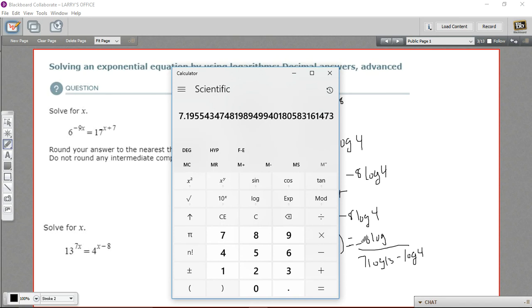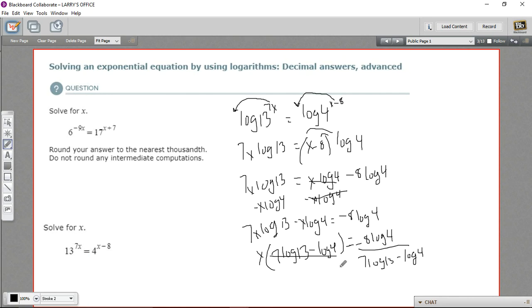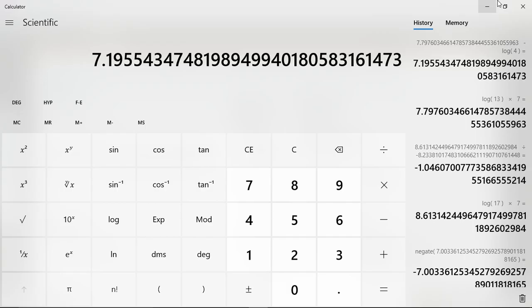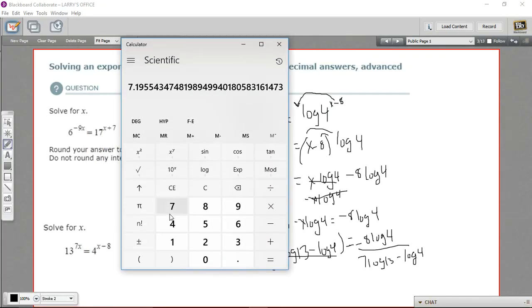Now we're going to have a negative 8 times a log 4. So let's try that. 4, we'll take the log, multiply that by 8, negative 8. So that's the top. Now we're going to divide by the bottom. So divide by memory recall. And we get negative 0.67.